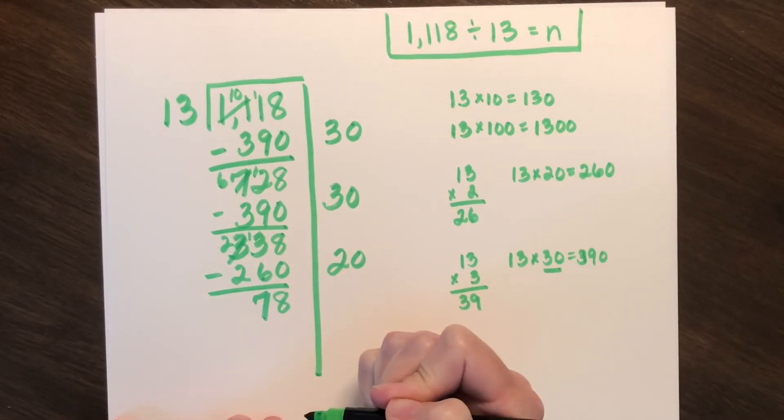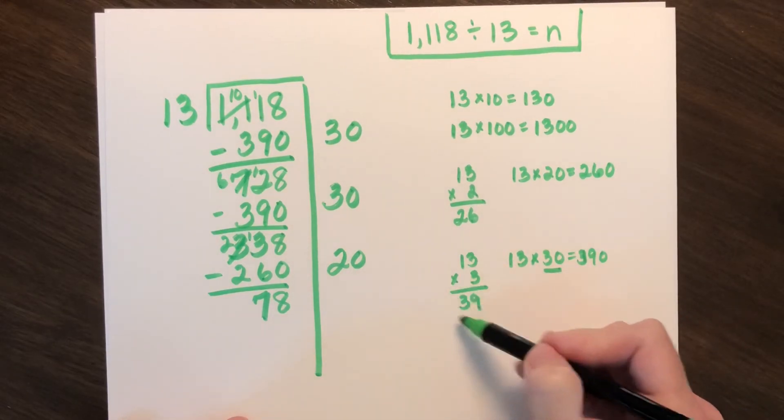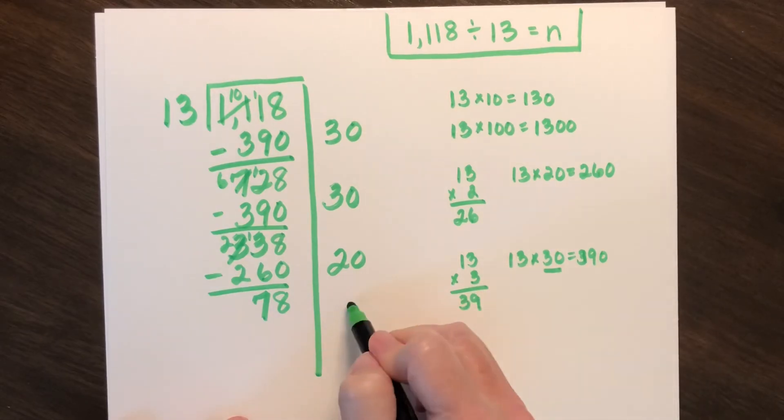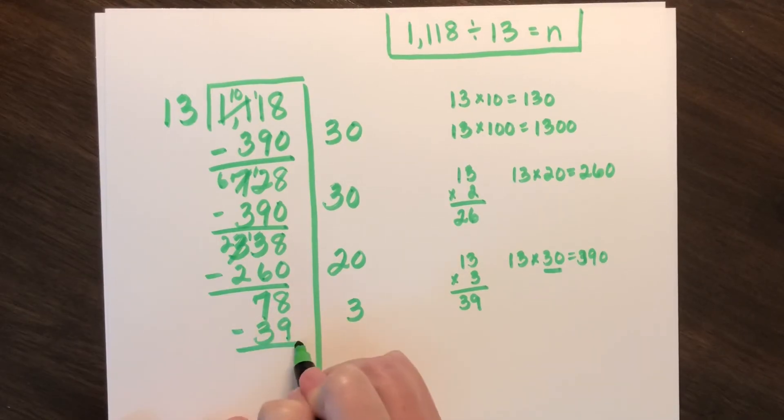And I have 78. I can go back to 13 times 3, and I know there's at least 3 groups in 78. So I could subtract out 39.